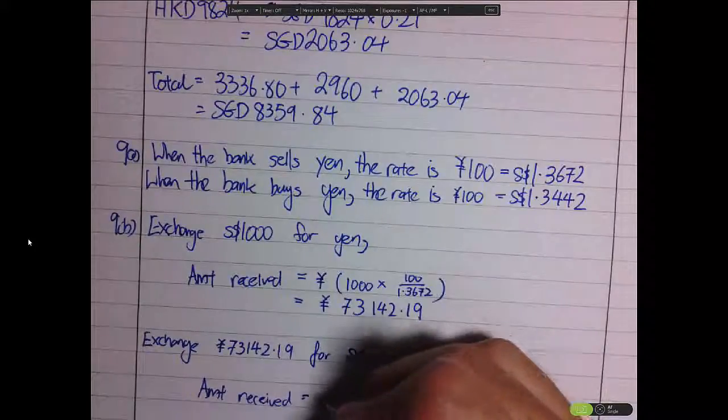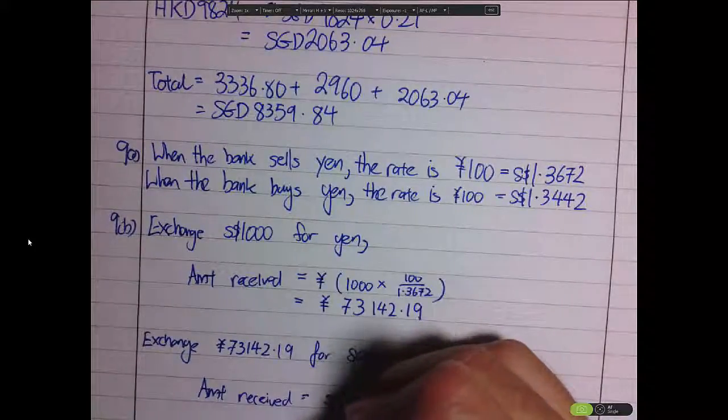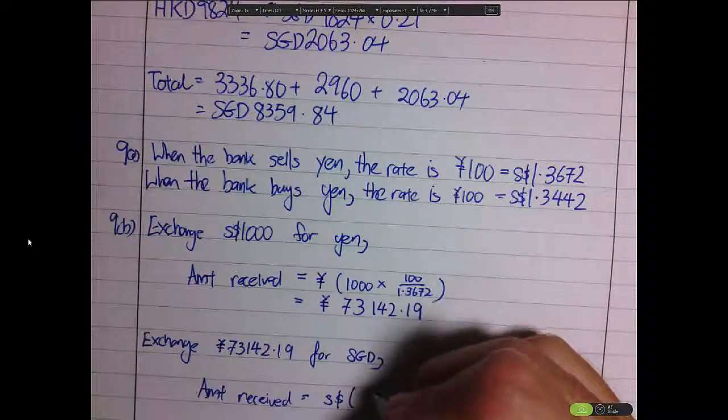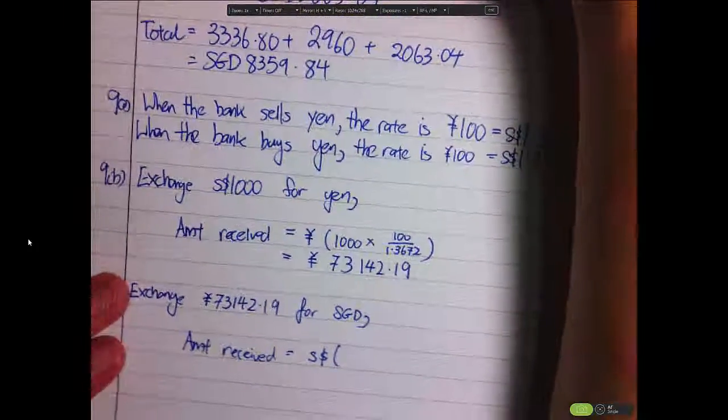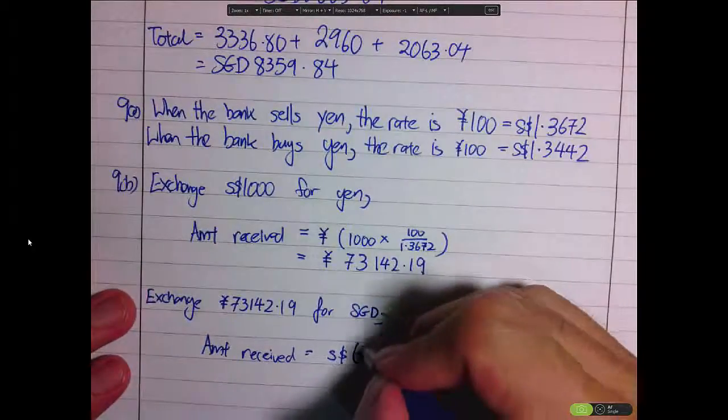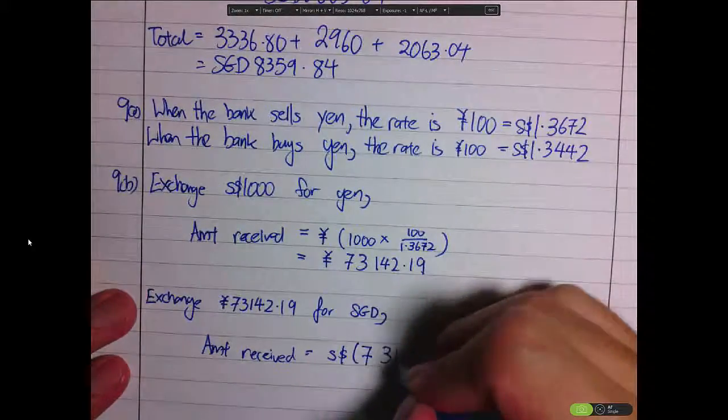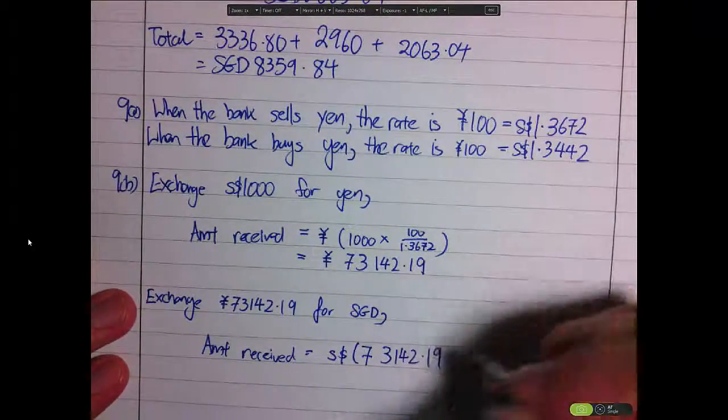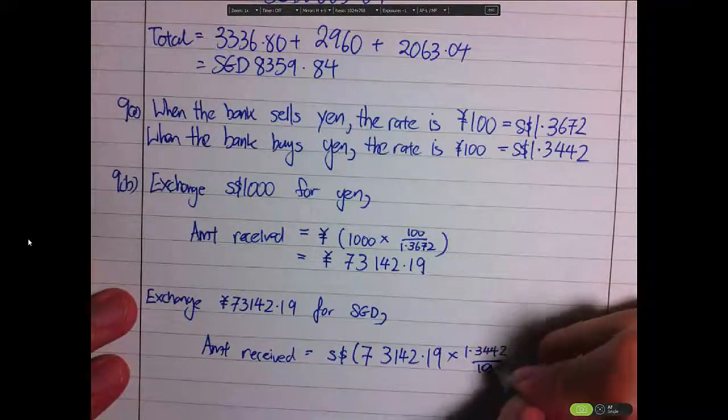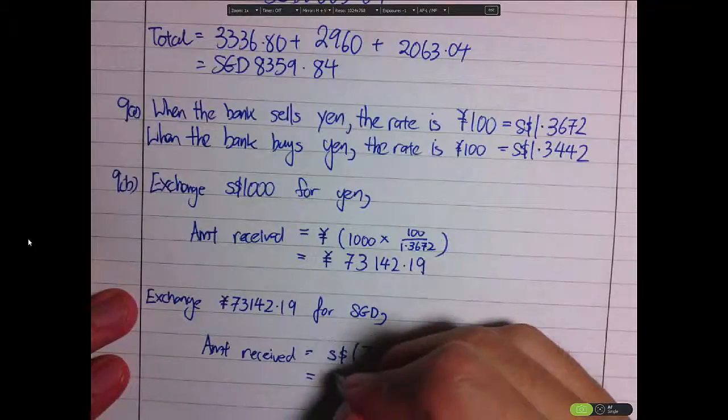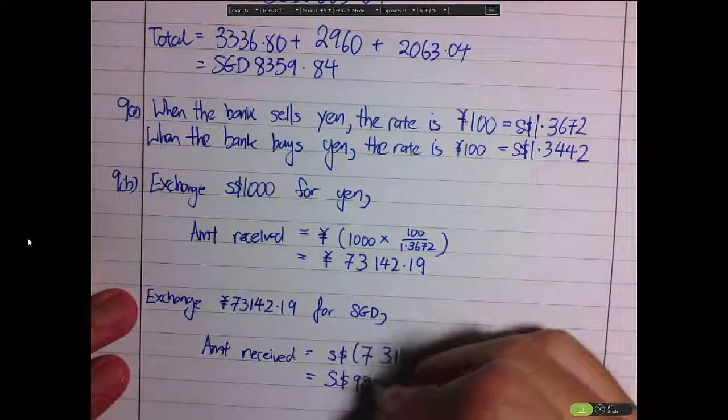73,142.19 times 1.3442 over 100, and eventually you will get back $983.18.